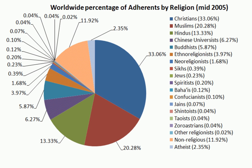Evidence attesting to prehistoric religion in the Indian subcontinent derives from scattered Mesolithic rock paintings such as at Bhimbetka, depicting dances and rituals. Neolithic agriculturalists inhabiting the Indus River Valley buried their dead in a manner suggestive of spiritual practices that incorporated notions of an afterlife and belief in magic. Other South Asian Stone Age sites contain rock art portraying religious rites and evidence of possible ritualized music.